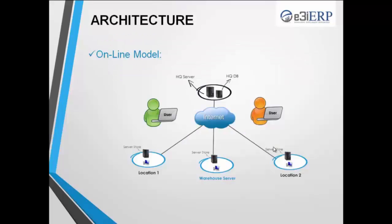Now let's see the architecture of the software — how many solutions we provide. We offer 3 types of solutions. The first is the online module, which installs the software in your head office and connects it with all other locations. This module requires 100% internet connection. Without internet this solution won't work. Whatever transaction is done at any location automatically gets saved in the head office, and any detail can be viewed live from the head office.